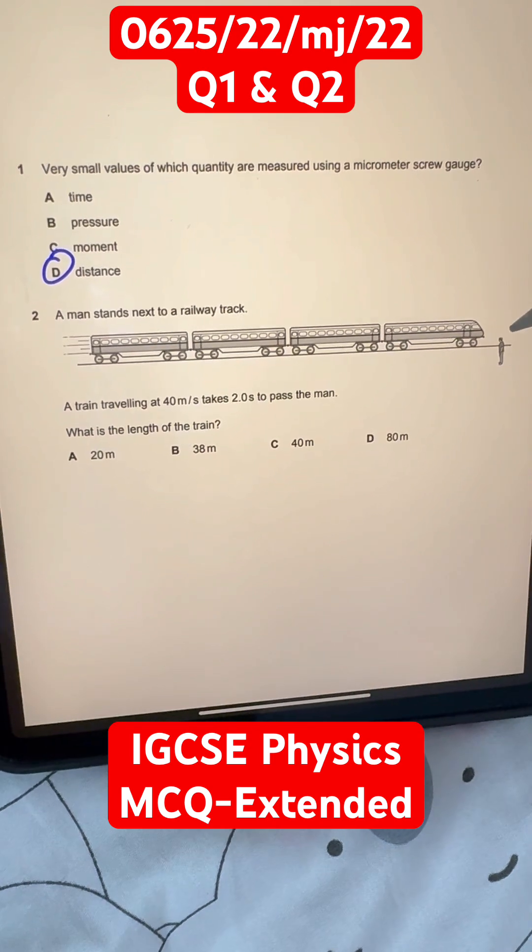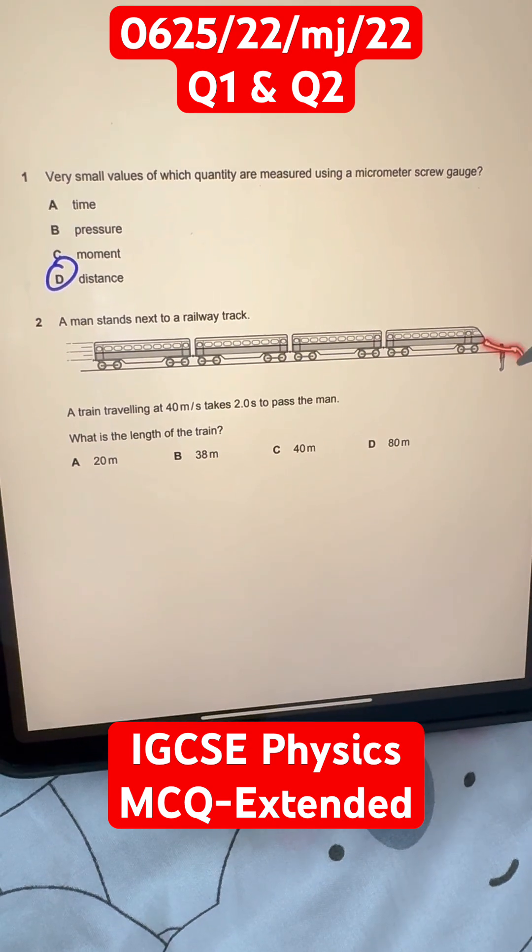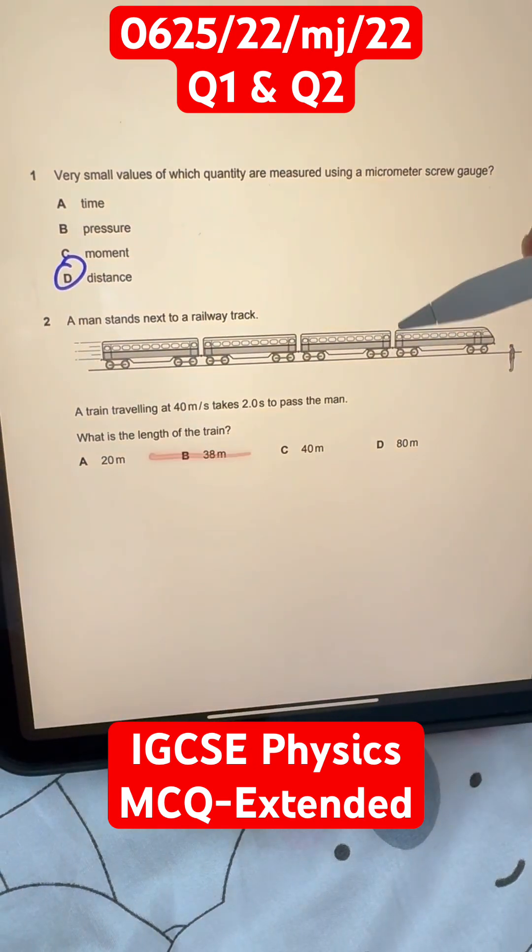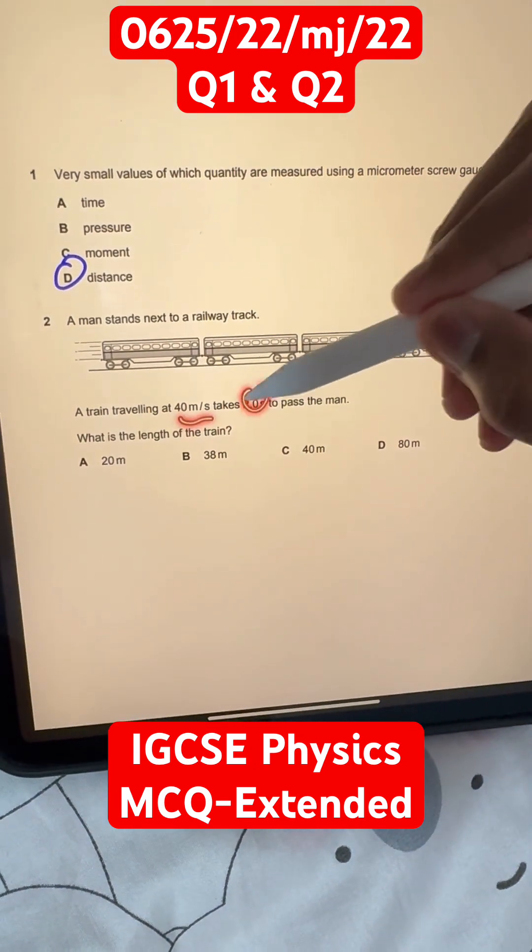So basically, the distance traveled by the start of the train, the head of the train, is this length of the train. And 40 meters per second in two seconds.